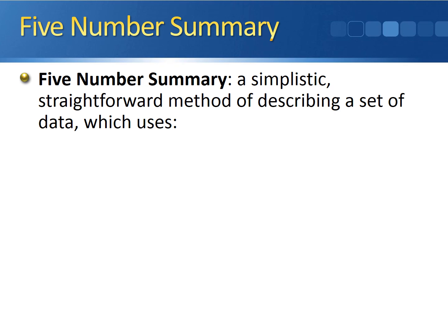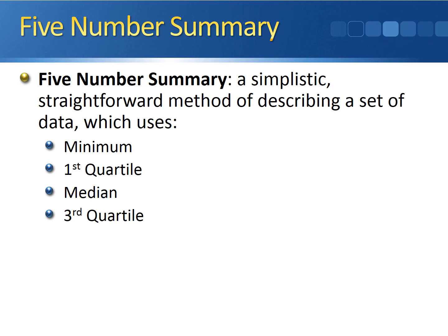The five-number summary is a simple, straightforward method of describing a set of data. As the name implies, there are five numbers included: the minimum of your data set, the first quartile, the median, the third quartile, and the maximum of your data set.